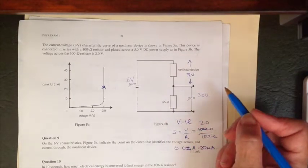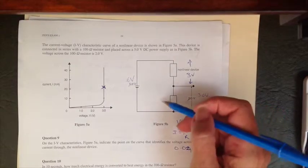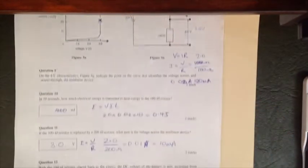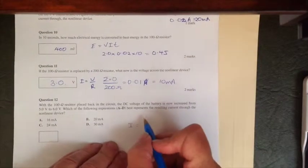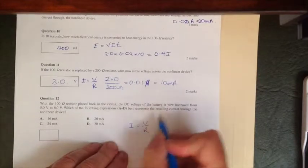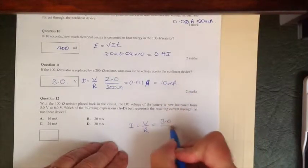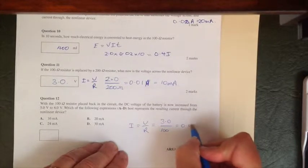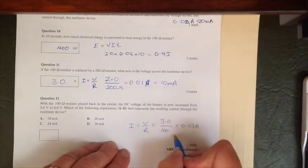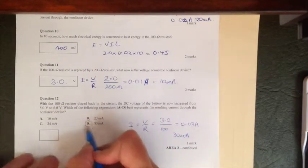If there's 3 volts across our resistor and a 100 ohm resistance, then again using our current is equal to the voltage divided by the resistance, this time around our voltage is going to be 3 divided by the 100 ohms, and that's going to give us 0.03 of an amp, which is the same as 30 milliamps, which is option D.